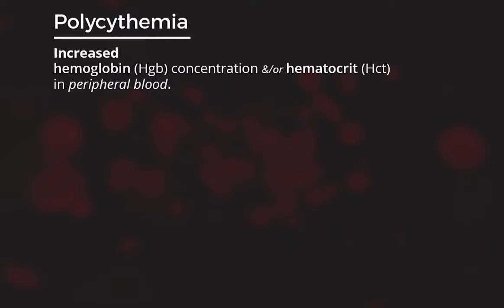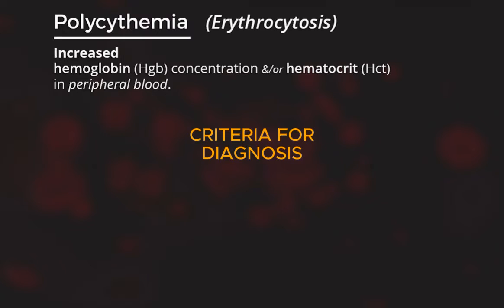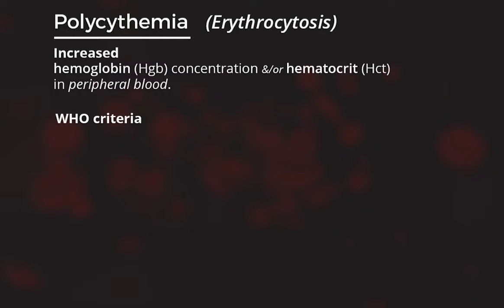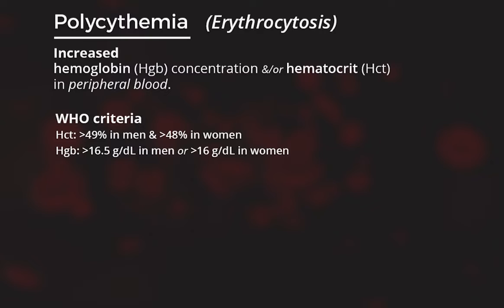Now we will start our main topic, polycythemia. Polycythemia is an increased hemoglobin concentration and/or hematocrit in peripheral blood. Polycythemia is also called erythrocytosis, and we can use both terms interchangeably. According to the World Health Organization definition, polycythemia is present if hematocrit is greater than 49% in healthy adult men and greater than 48% in women, or when hemoglobin is greater than 16.5 g/dL in men or more than 16 g/dL in women. In British literature, polycythemia is defined as hematocrit greater than 52% in males and greater than 48% in females.